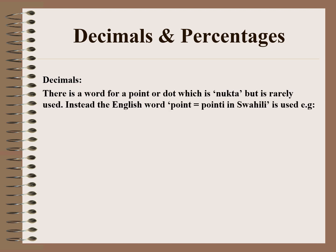On decimals: there is a word for a point or dot in Swahili, which is nukta, but the word nukta is rarely used. Instead, the English word point, pronounced pointy in Swahili, is used. For example, you may say kuminatisa pointi tatu nne moja saba, meaning 19.3417. This can also be said with nukta instead of point, but nukta is rarely used.